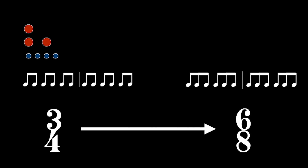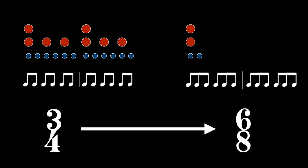The most common way that hemiolas occur in music is when you have a triple meter with straight divisions, such as a 3/4 time signature — one and two and three and — and then you briefly (or for a long time) switch those pulses to become compound duple, so the pattern becomes one and two and, which could be written as a 6/8 time signature.